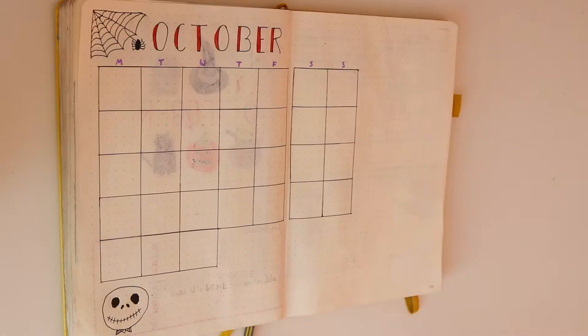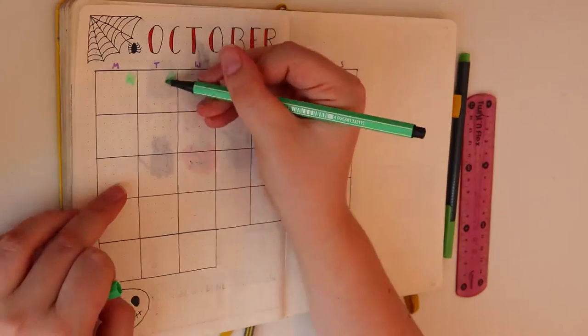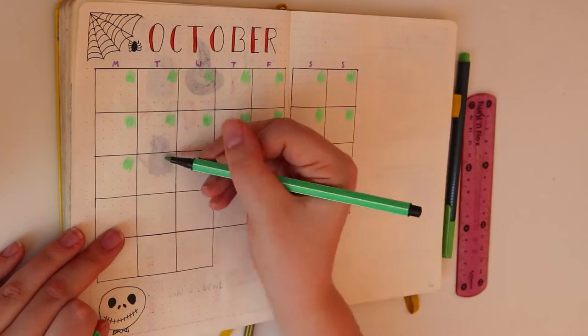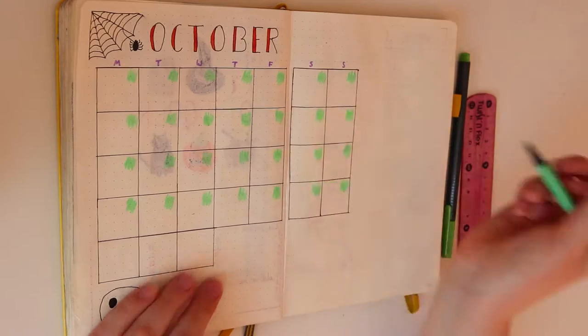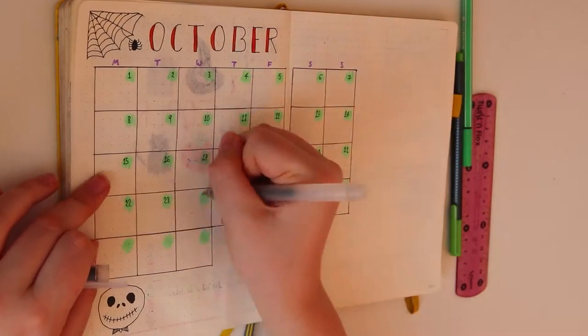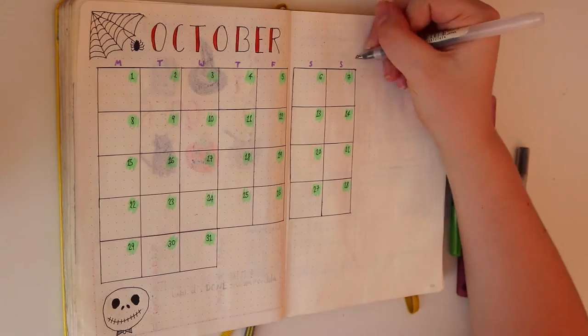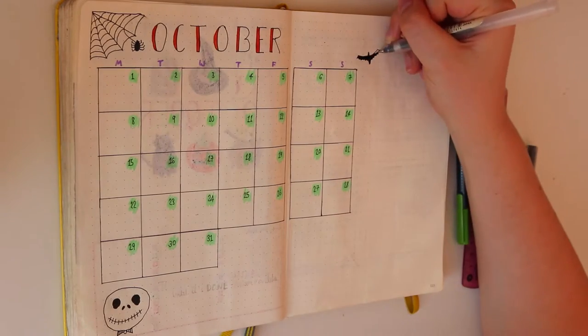I decided to continue my green, orange and purple theme here too as they are colours I really associate with October and Halloween. I'm not sure about the green that I used on my calendar as I thought it would be a little bit more neon but oh well.